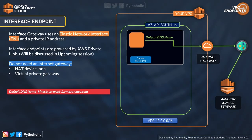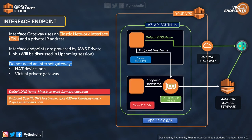Looking at the visual on the right, without VPC endpoints, to privately access Kinesis Data Streams you would use an internet gateway with the default DNS name — kinesis.us-west-2.amazonaws.com. With VPC endpoints, an interface endpoint creates an ENI with a private IPv4 address taken from your subnet's IP pool. This ENI serves as the entry point for traffic destined to supported AWS services like Kinesis.